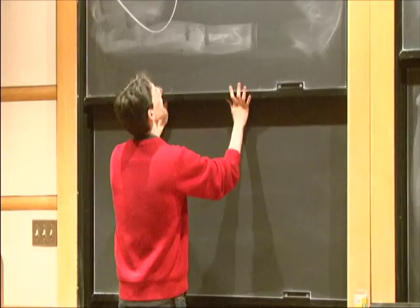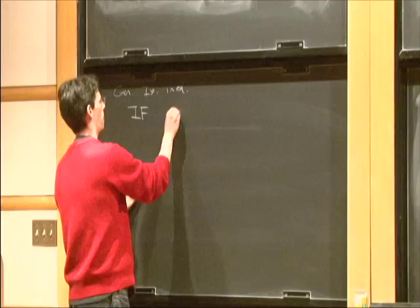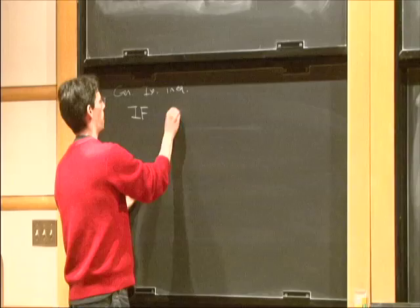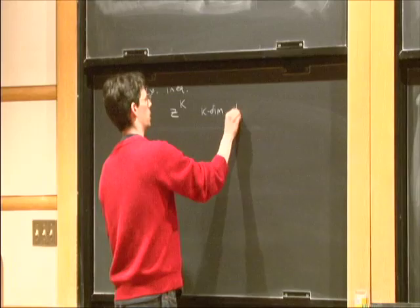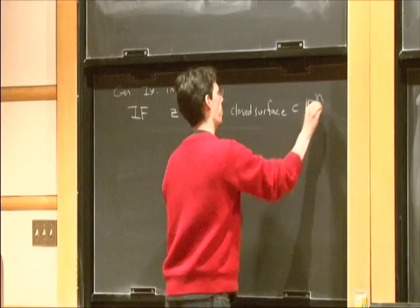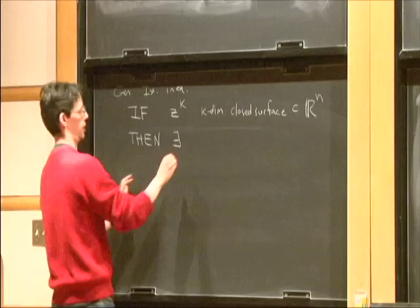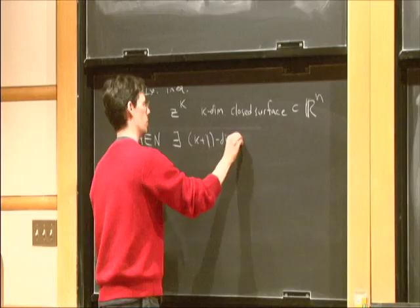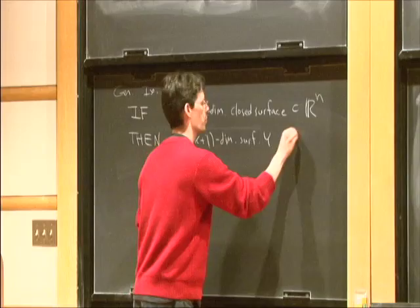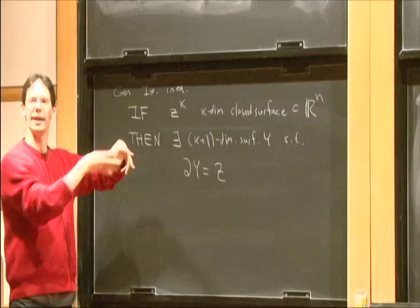So we can write that in the following way, general isoperimetric inequality. If I have a k-dimensional closed surface Z contained in the Euclidean space Rn, then there exists a k-plus-1 dimensional surface Y, with the following two properties. The boundary of Y is Z, so the soap film is spanning the loop or the surface.